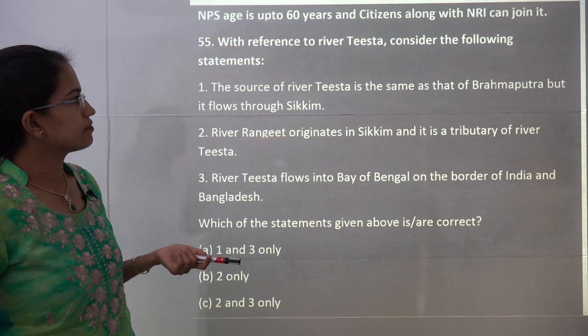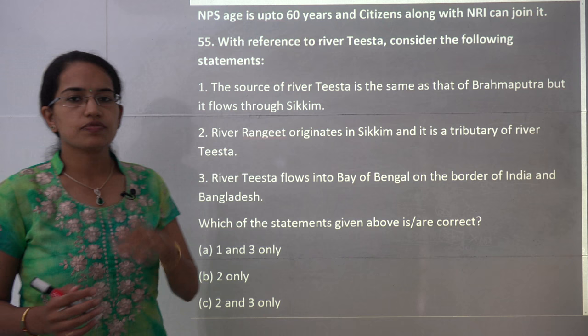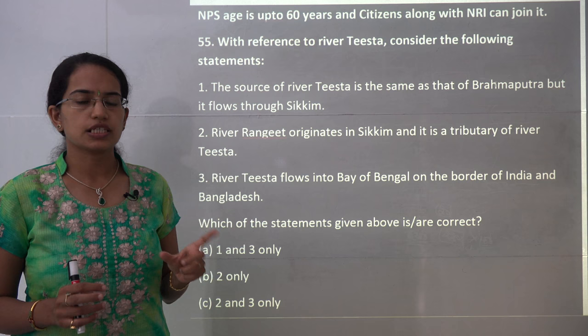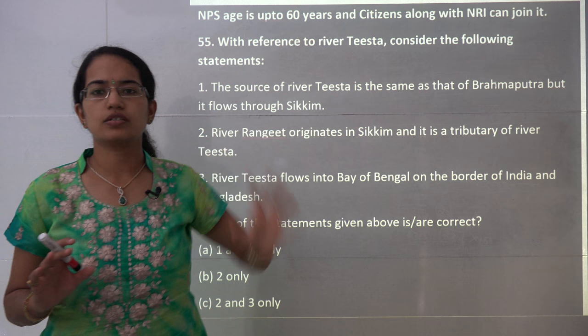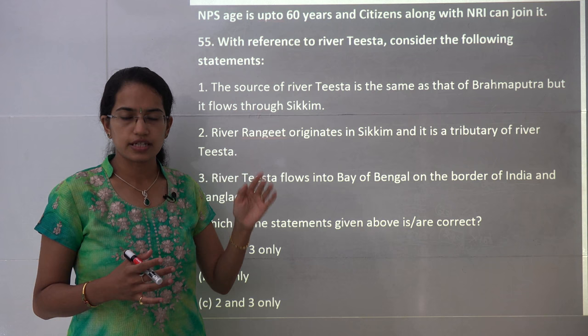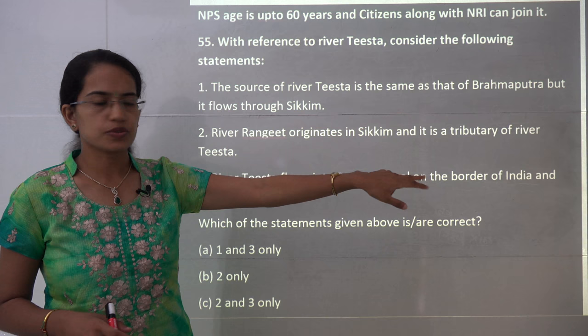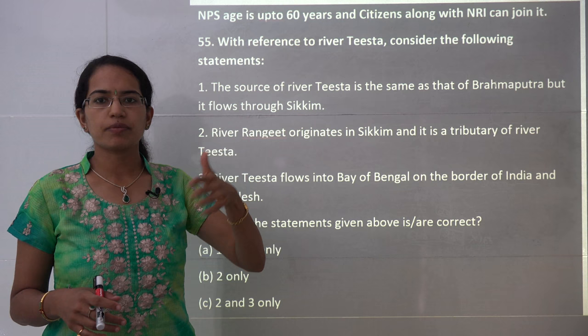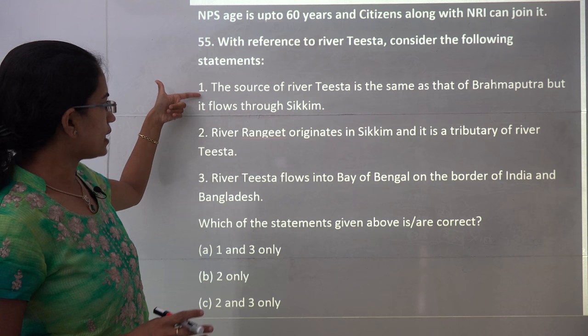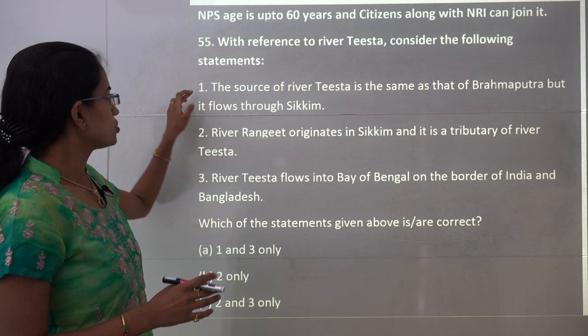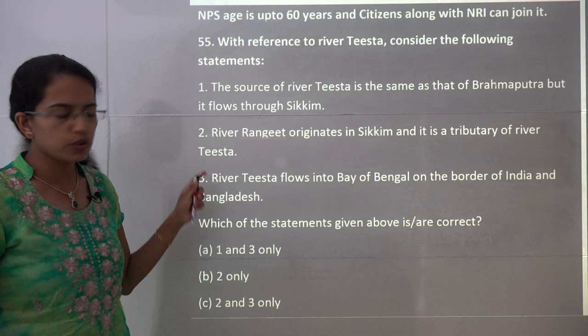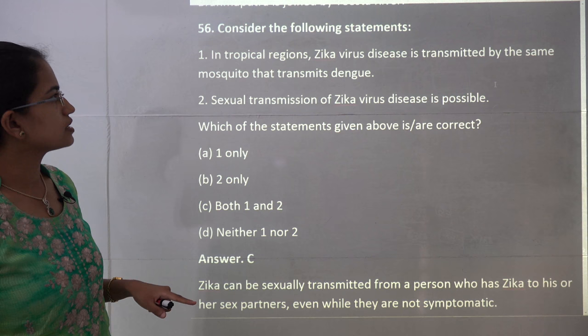The next question is about the Tista River. Tista has been in the news recently, and questions related to it have high probability for mains as well. Rangit River originates in Sikkim and is one of the tributaries of Tista — that is correct. Tista forms a boundary between West Bengal and Sikkim and finally merges into the Brahmaputra, so statement 1 is incorrect. Statement 2 is the correct answer, making B the right choice.